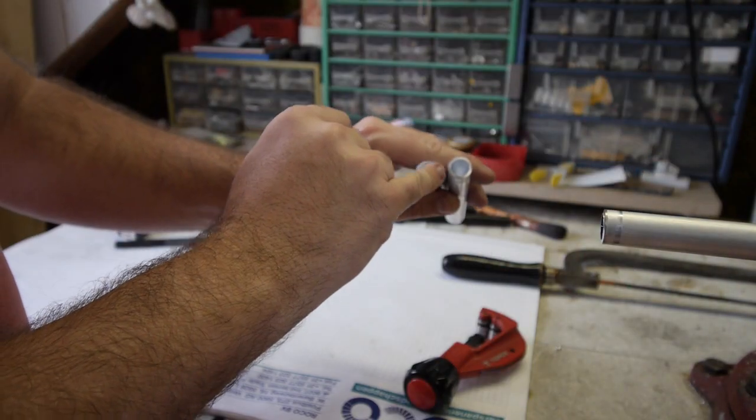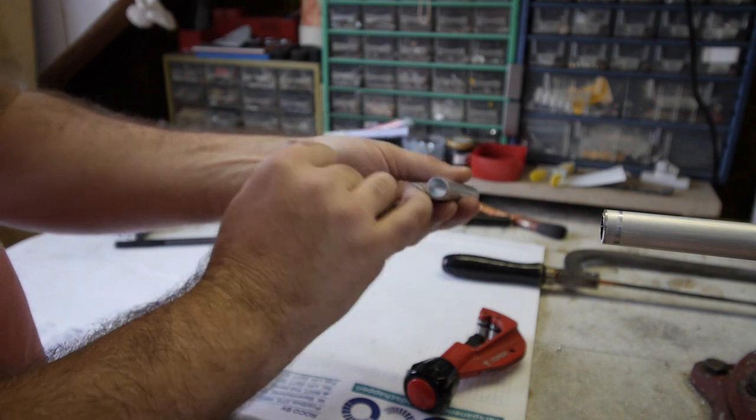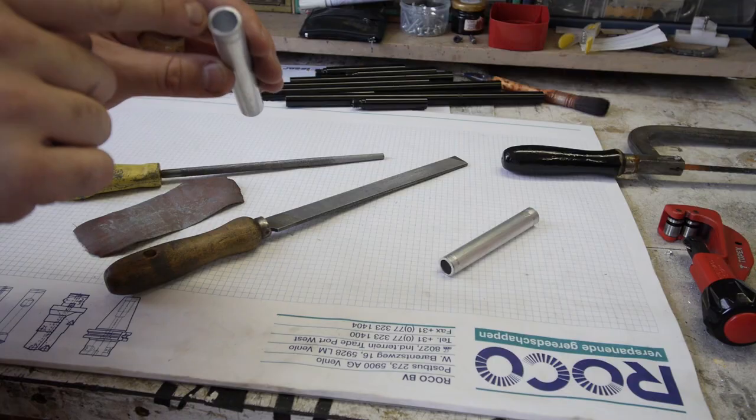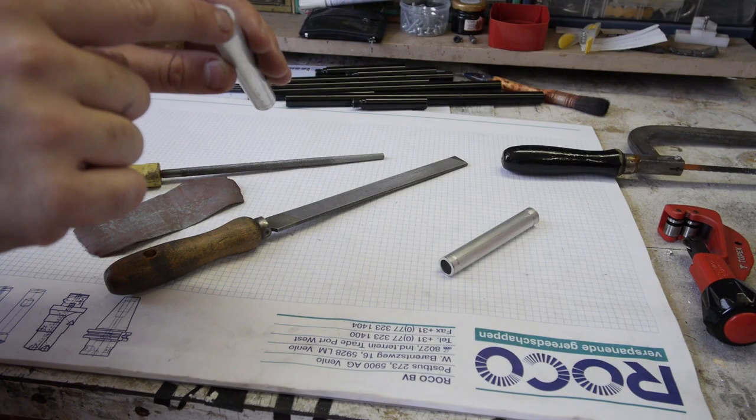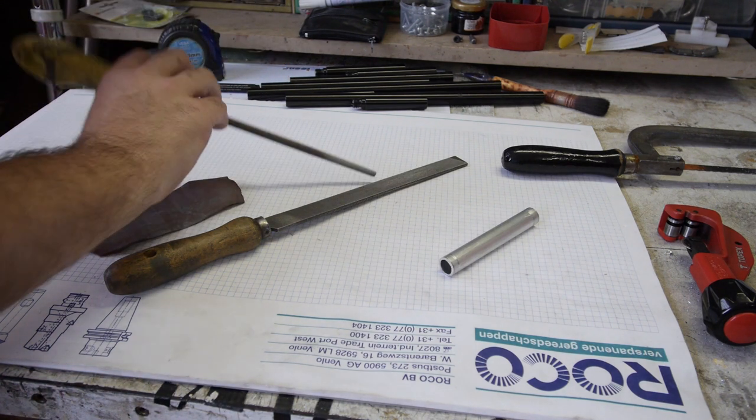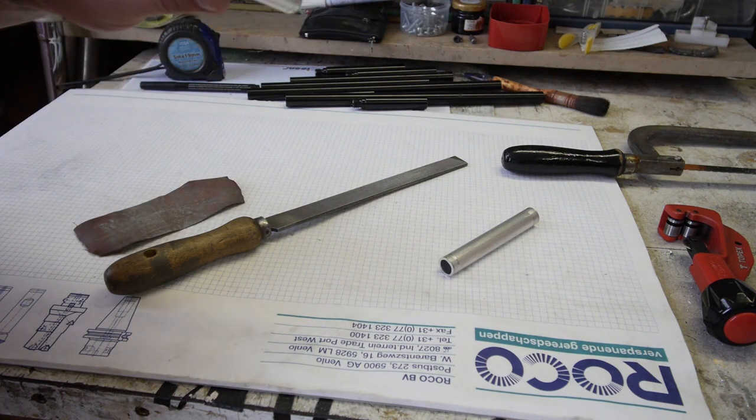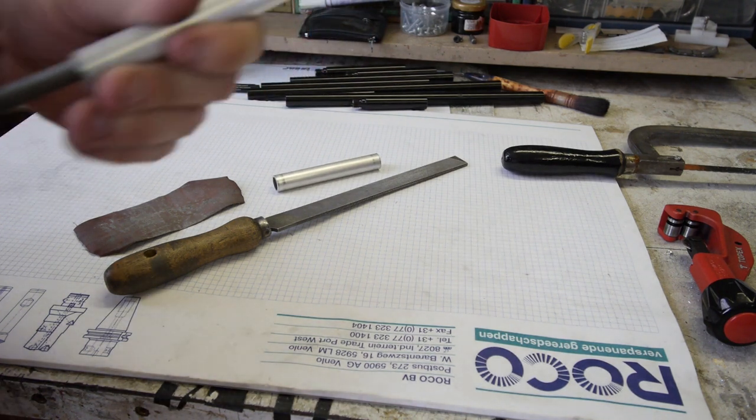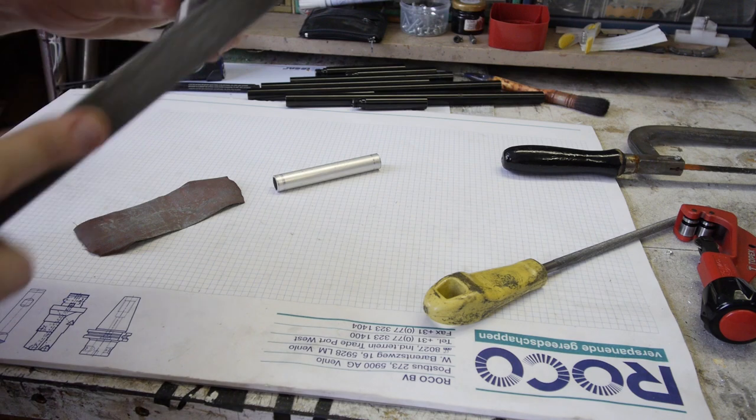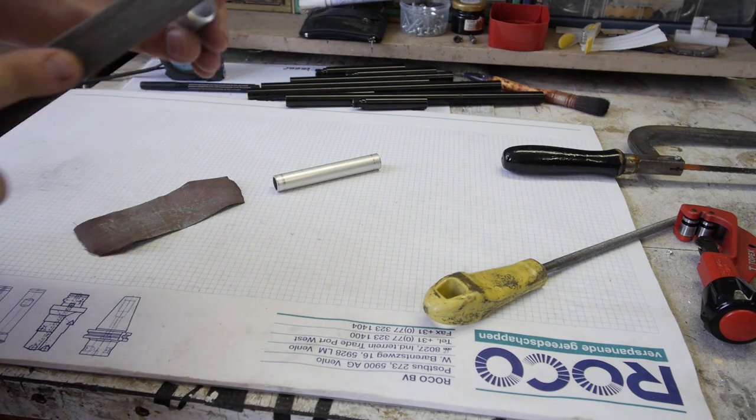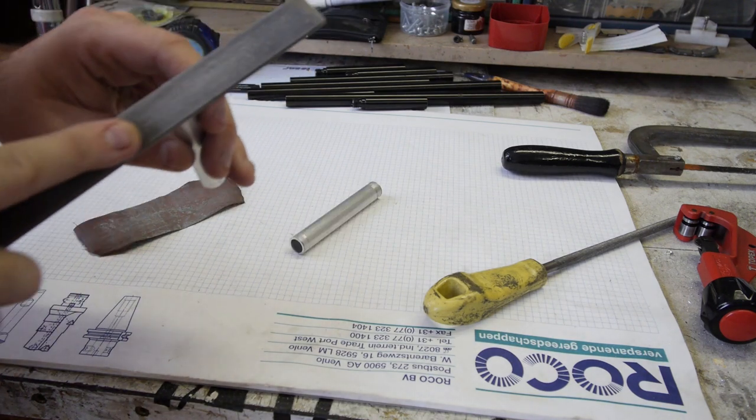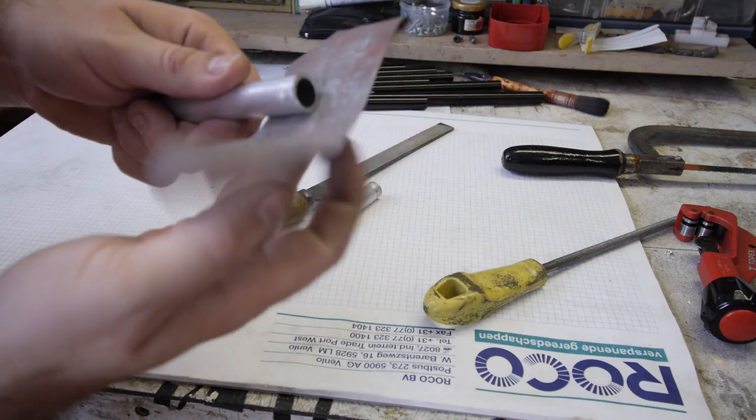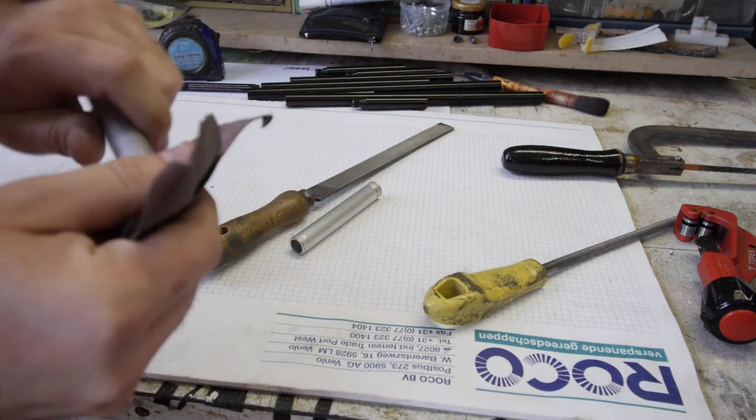We only need to clean it up here a bit. So let me show you how you can do that. There is a little bit too much material here inside, so we take a file and just remove that. Flat file we can just straighten it up a bit more, and cut some sandpaper and sand off the edges.